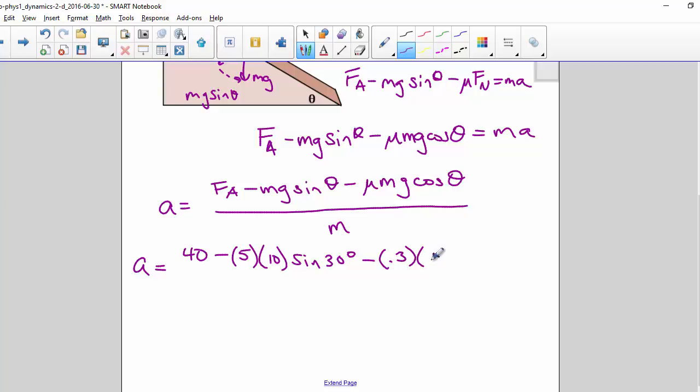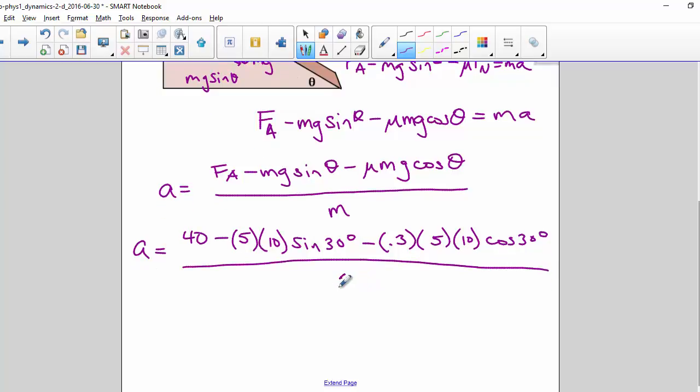Again, m is 5, g is 10, times the cosine of 30 degrees, all divided by m, which is 5. So then a becomes 0.55 meters per second squared.